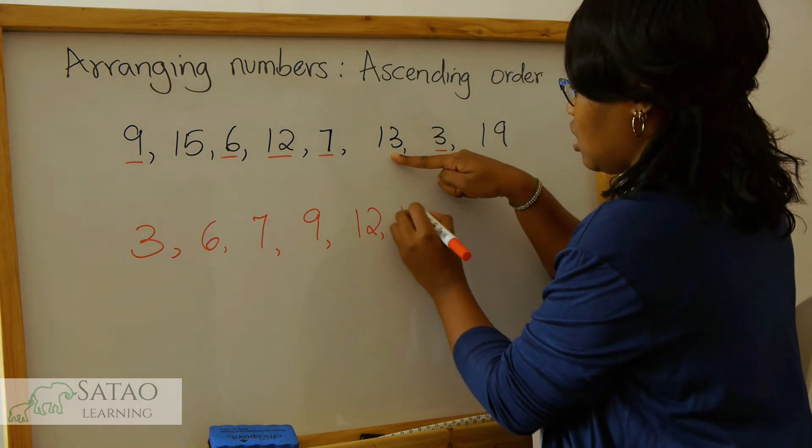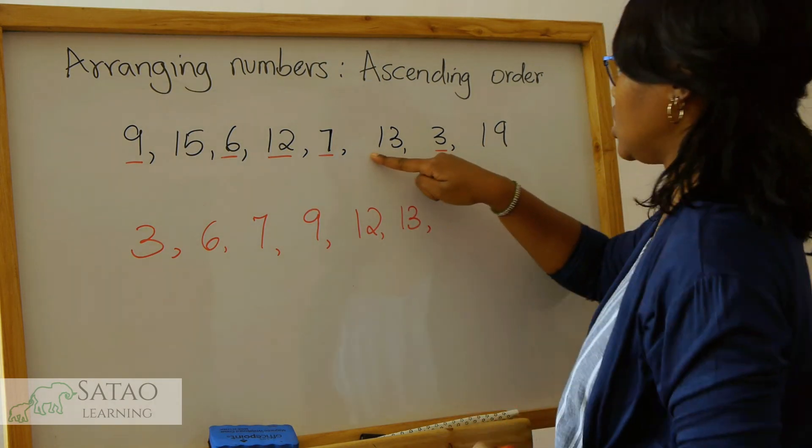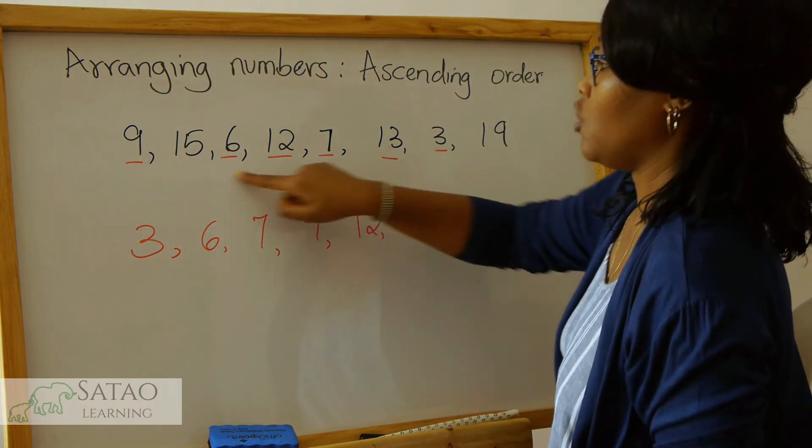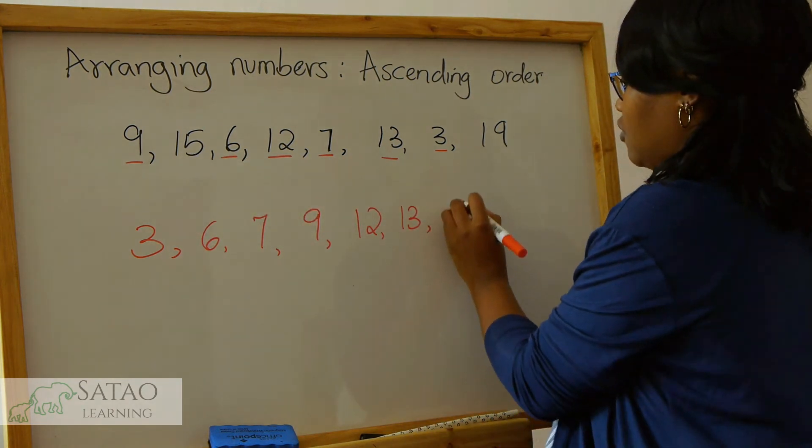From 12 we can go to 13, then which is the next number? 14, 15.